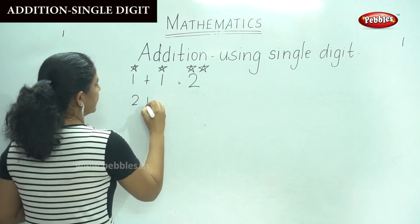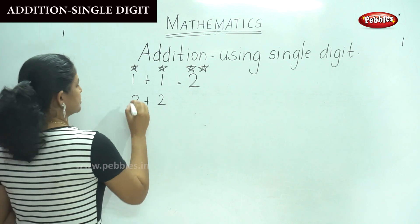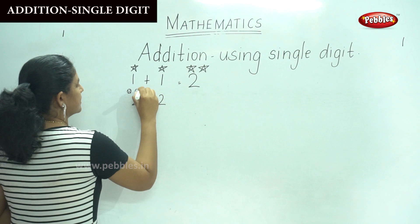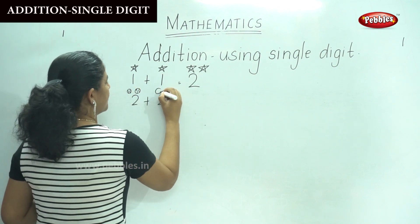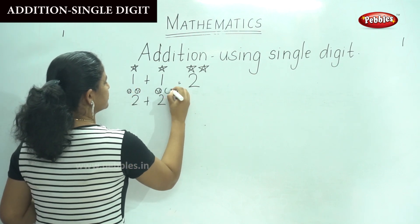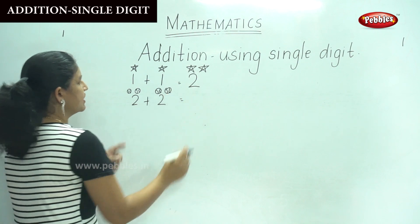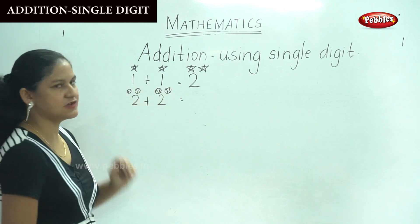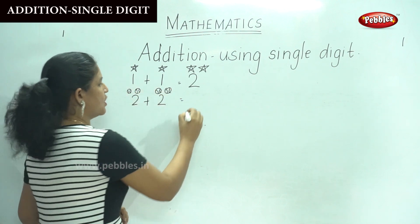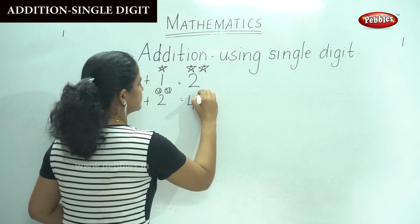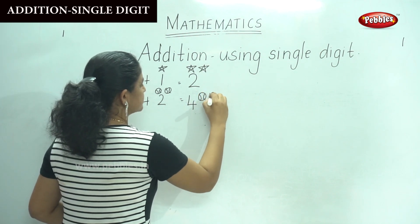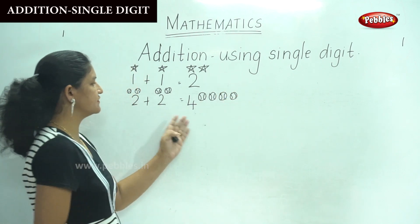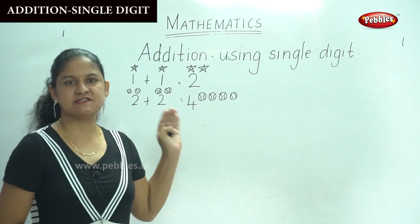Next, 2 plus 2. For 2 I am going to draw 2 balls: 1, 2 on one side, and 1, 2 on the other side. So we are going to count the number of balls: 1, 2, 3, 4. So I have 4 balls. 2 plus 2 gives us 4. This is addition.